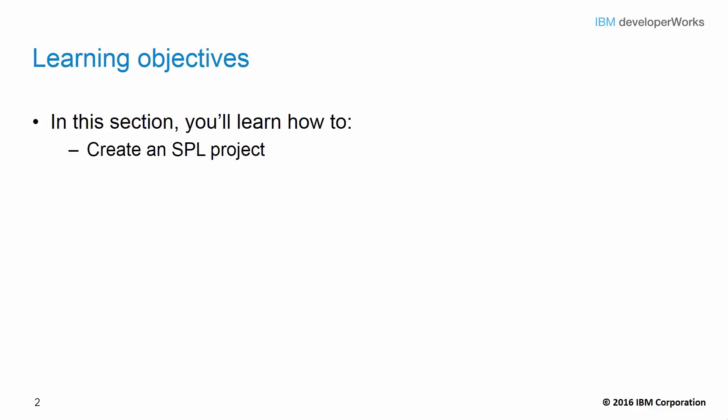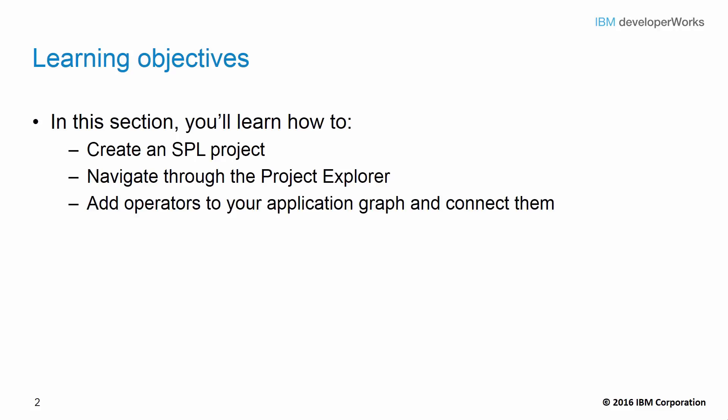In this lab, you'll first learn how to create a blank SPL project. Then, you'll walk through the components of an SPL project by looking at the Project Explorer. Then, you'll learn how to add operators to an application graph, which is essentially a graphical canvas for you to build your application on. You'll also learn how to connect these operators with custom streams that you define. Many operators require you to fill in some initial parameters before they actually start working, so you'll be learning how to modify the properties of operators as well.